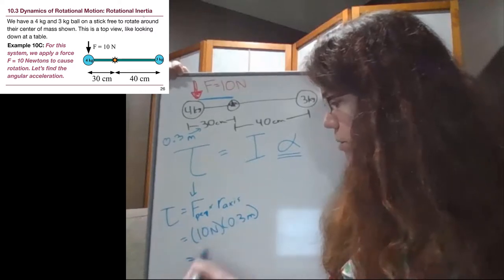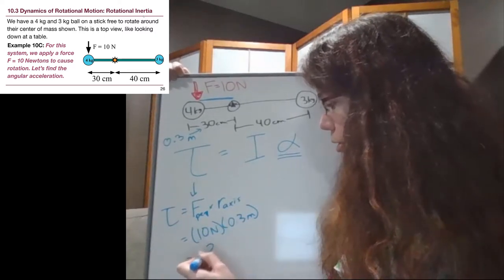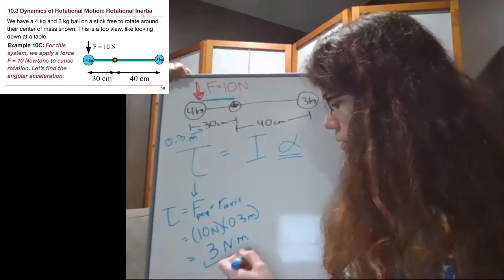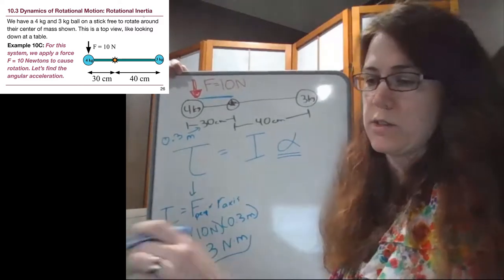And so the torque here, 10 times 0.3, is 3 newton meters. So that part is finished, we'll be able to plug it into this equation.